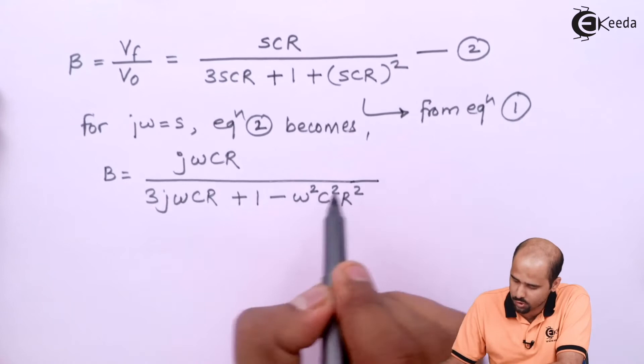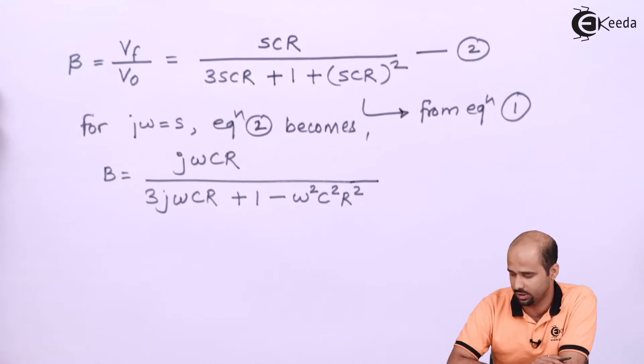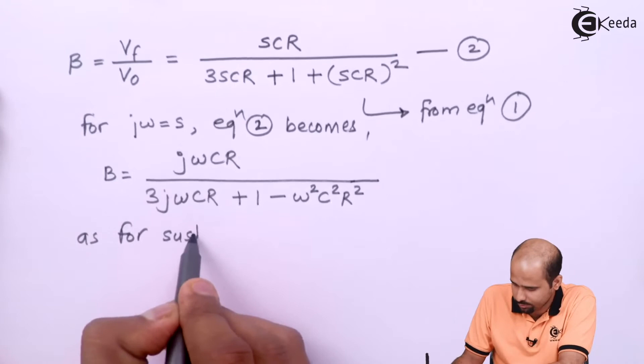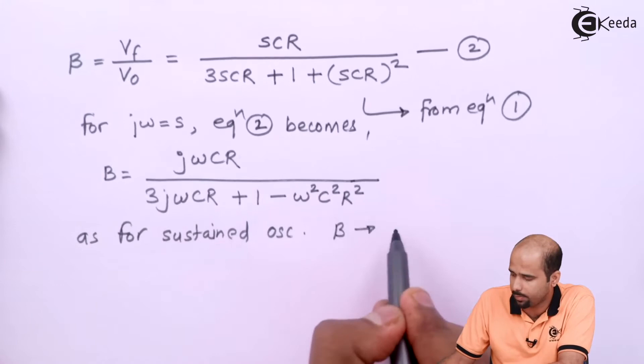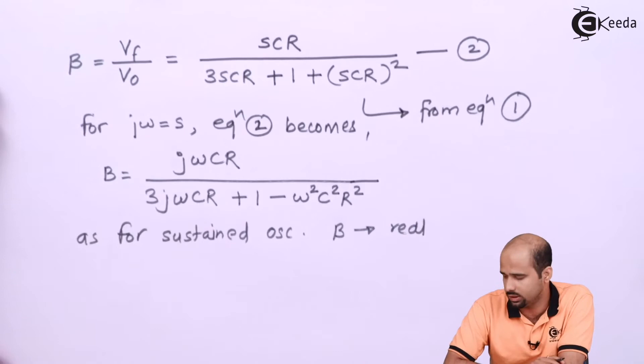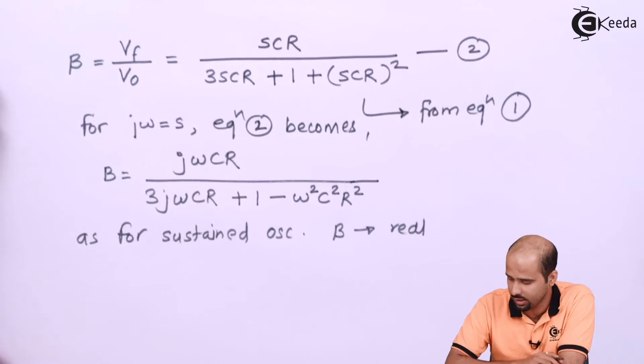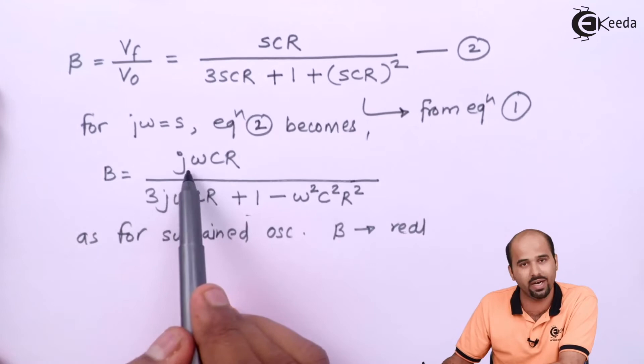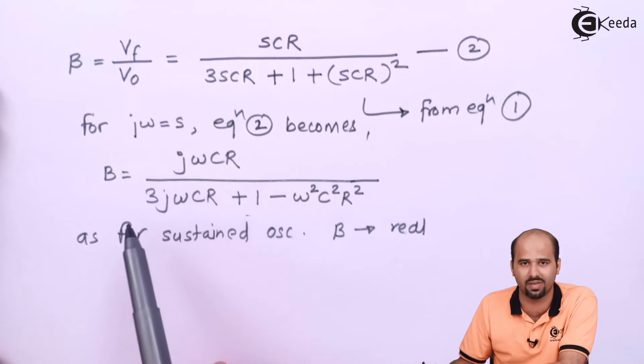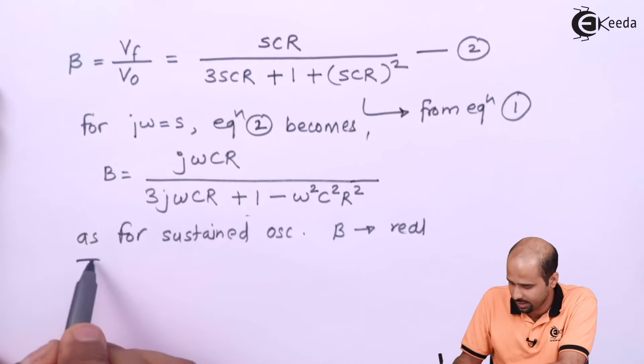For sustained oscillation, B must be real. For A and B both to be real, the gain product must be one positive. If B is real, then the imaginary part in the denominator must be zero — imaginary over imaginary will cancel, leaving a real result. To have B equal to real, we have to consider the complete imaginary term equal to zero.